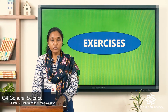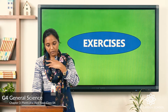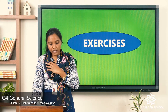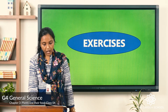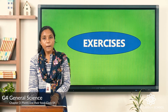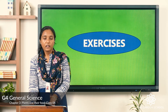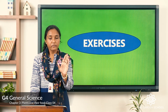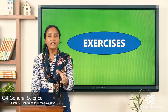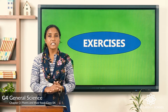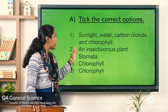Fifth question: a total parasitic plant cannot make food because it lacks — stem, flowers, branches, or chlorophyll? I hope you have ticked the options. Now let's see the five correct answers.